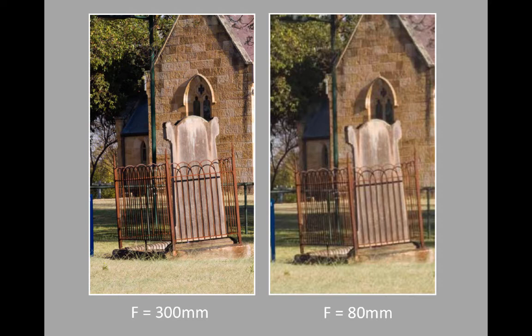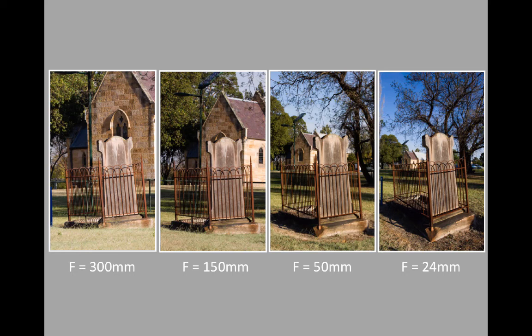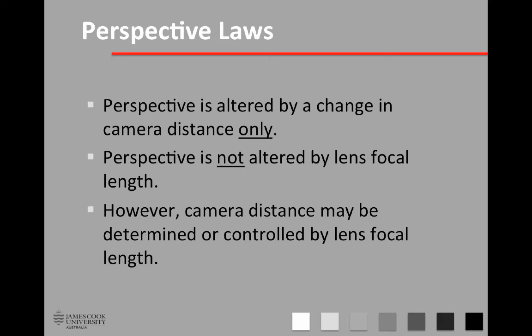A lot of the literature in more basic amateur photography books will say that perspective is changed by focal length — it's not correct. Going back to the four original images, there was something I didn't mention: when I changed lenses, I also moved the camera closer to the subject. So there were actually two variables — focal length AND camera distance (u-distance). The perspective law is: perspective is altered by a change in camera distance only. Perspective is not altered by lens focal length.